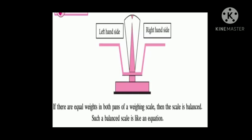Children, you can see a weighing scale over here. The left hand side and the right hand side of the weighing scale are equal. If there are equal weights in both pans of a weighing scale, then the scale is balanced. Such a balanced scale is like an equation.